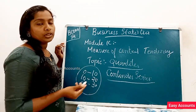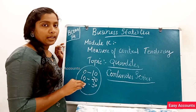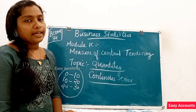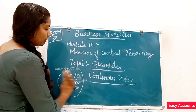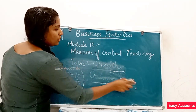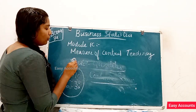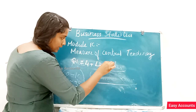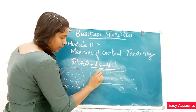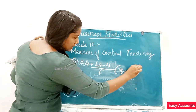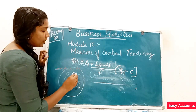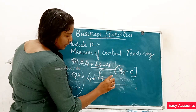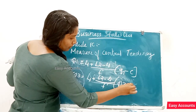We are going to take a look at Q1 and Q3. Now let's look at the equations. The Q1 equation is: L1 plus (L2 minus L1) divided by F, into Q1 minus C. The Q3 equation is: L1 plus (L2 minus L1) divided by F, into Q3 minus C.